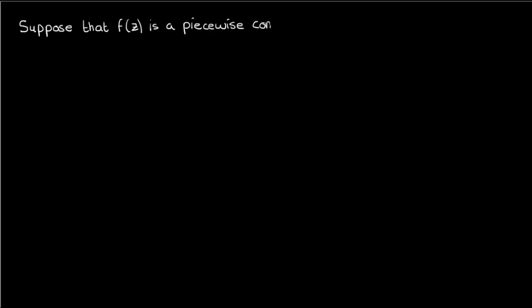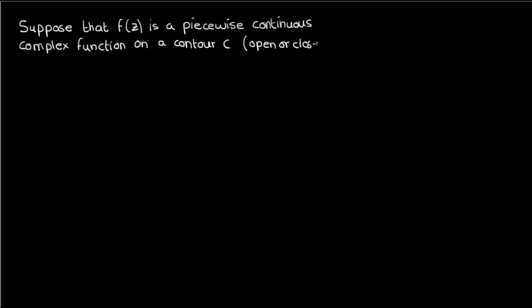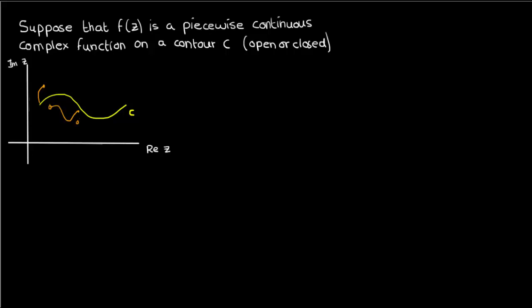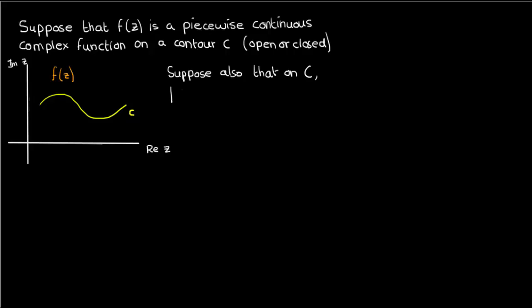Let's say we have a complex function f of z that's piecewise continuous on some curve or contour c that can be either open or closed. A piecewise continuous function means a function that has a finite number of discontinuities inside c and doesn't go to infinity anywhere inside c. So if this is my curve c, then this would be an acceptable piecewise continuous function. Suppose also that on the contour c, the magnitude of f of z has an upper limit m.